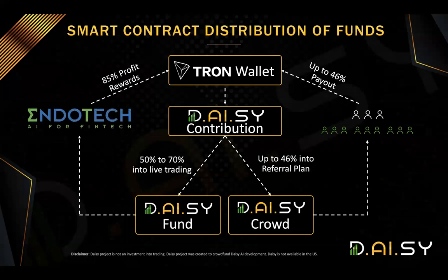The portion that goes into the DAISY fund will be sent to Endotech brokerage accounts on Binance or Gemini and will be traded for the members. 85% of profits will go back to the smart contract — 70% will go to members and 15% will go to the residual referral plan.